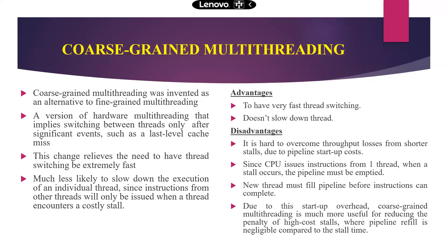Coarse-grained multi-threading was invented as an alternative to fine-grained multi-threading. It implies switching between threads only after significant events, such as a cache miss. This relieves the need for extremely fast thread switching and is much less likely to slow down the execution of an individual thread, since instructions from other threads will only be issued when the thread encounters a costly stall.